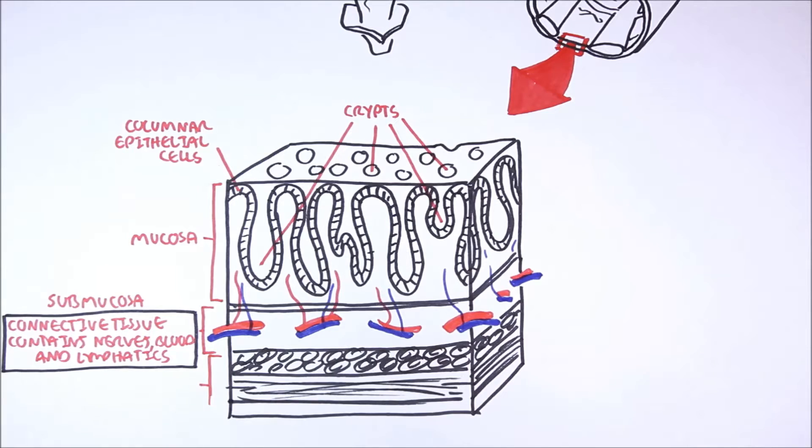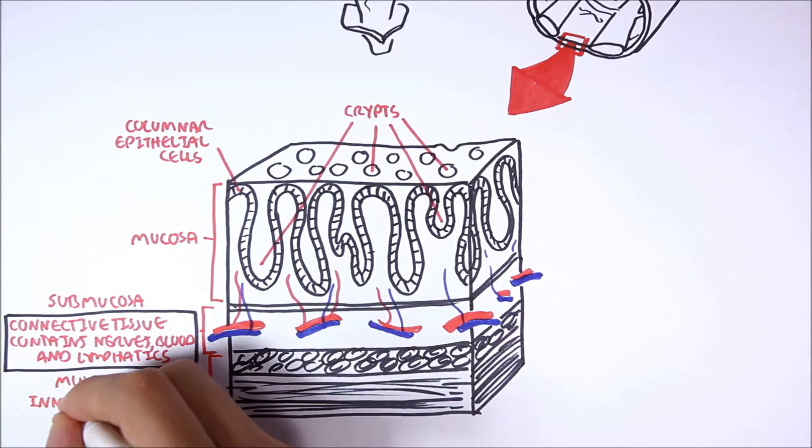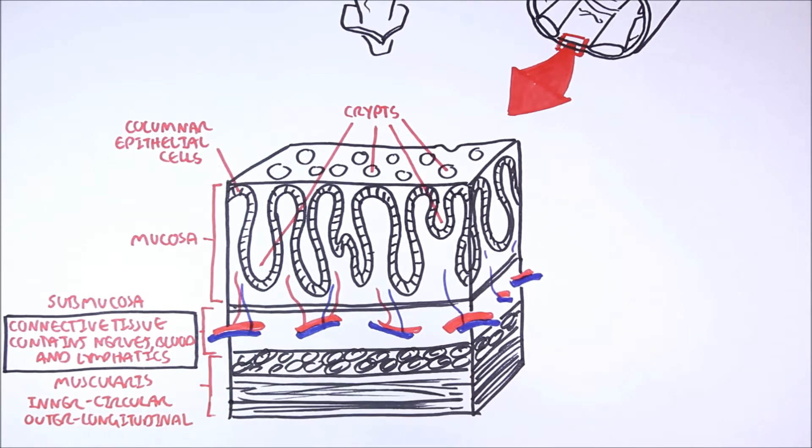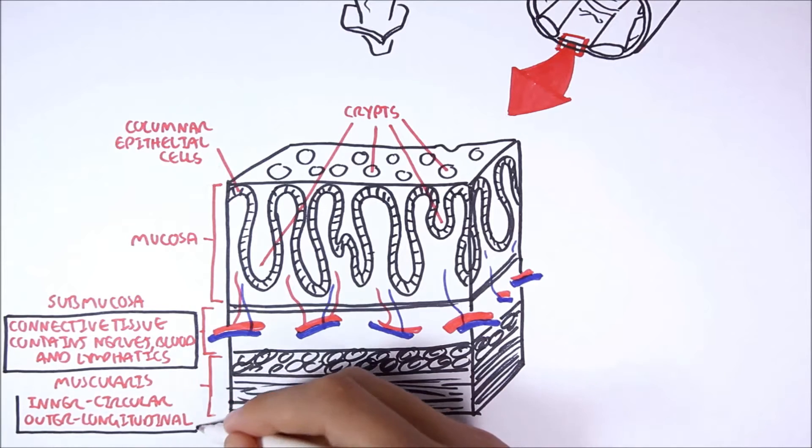Then there is the muscularis, which is the muscle layer. There are actually two muscle layers. We have the inner muscle layer, where we have circular muscles, and then the outer muscle layer, where we have longitudinal muscles.